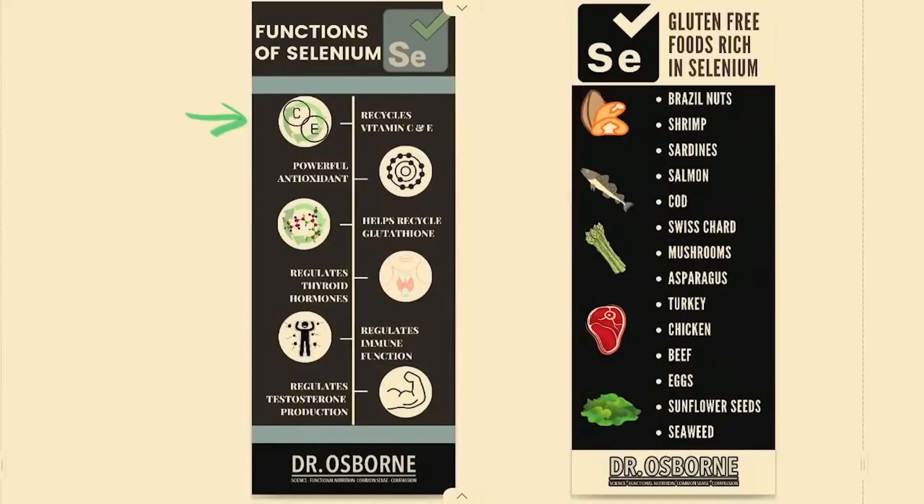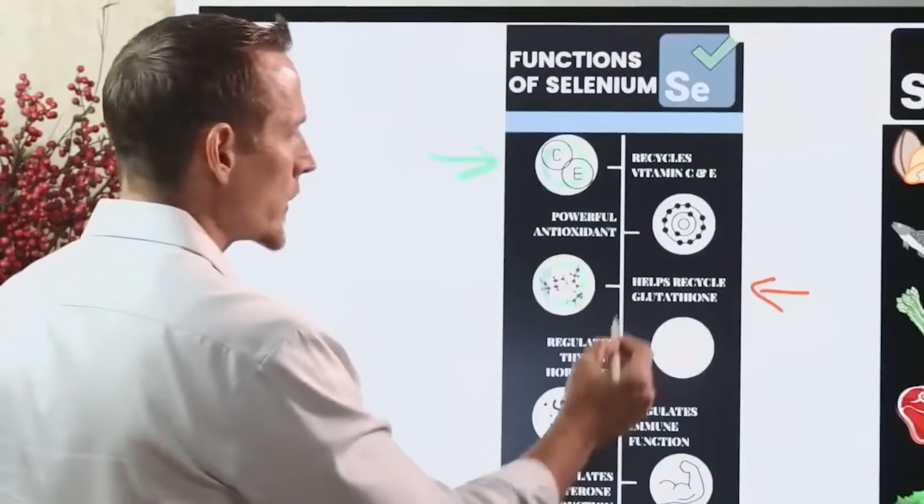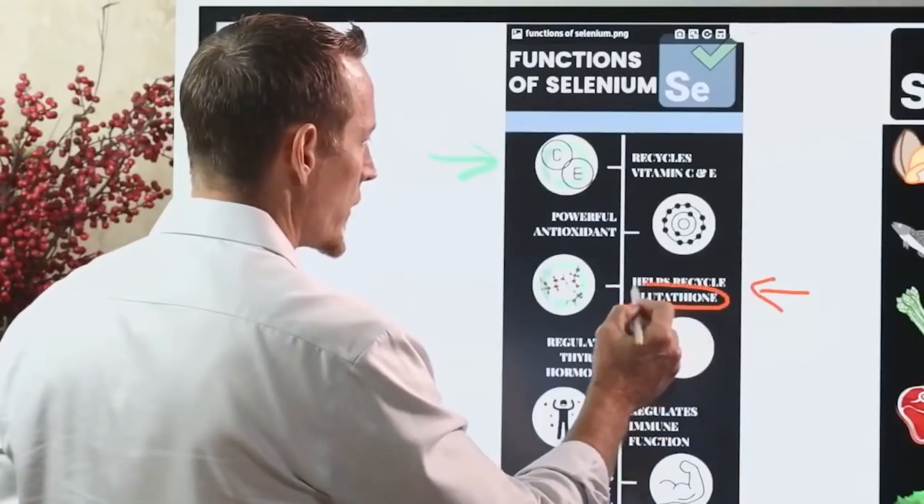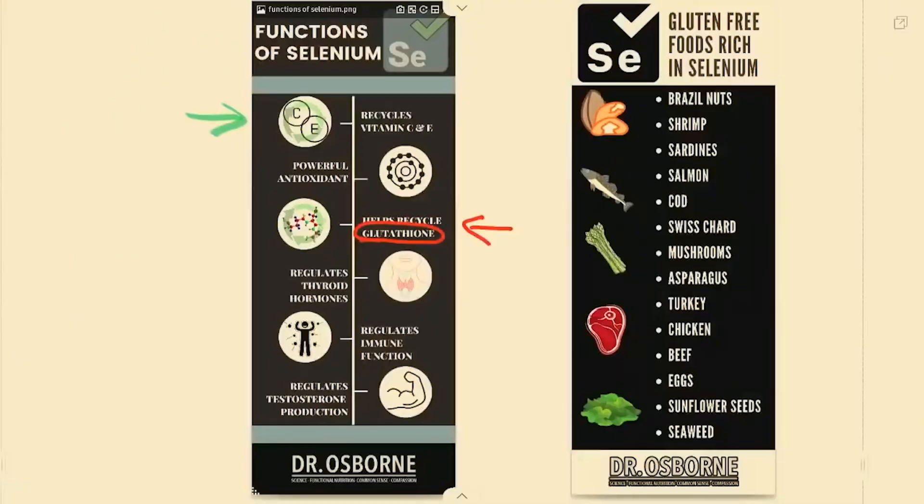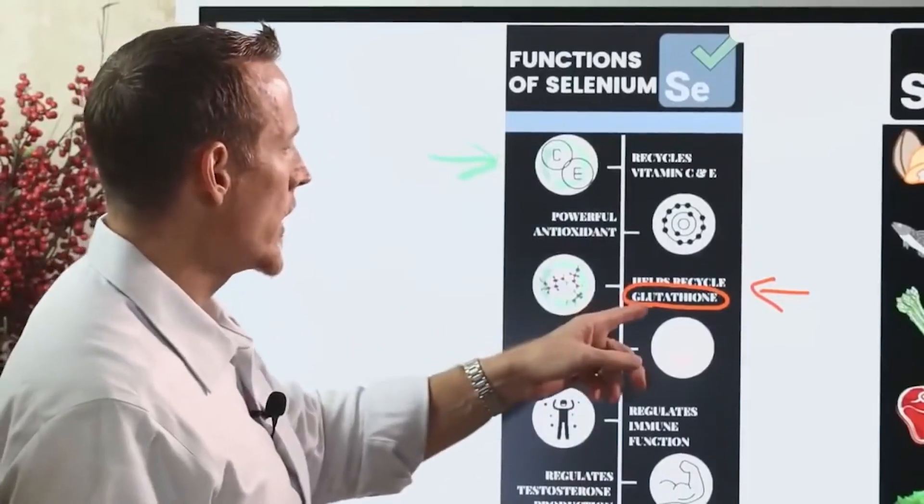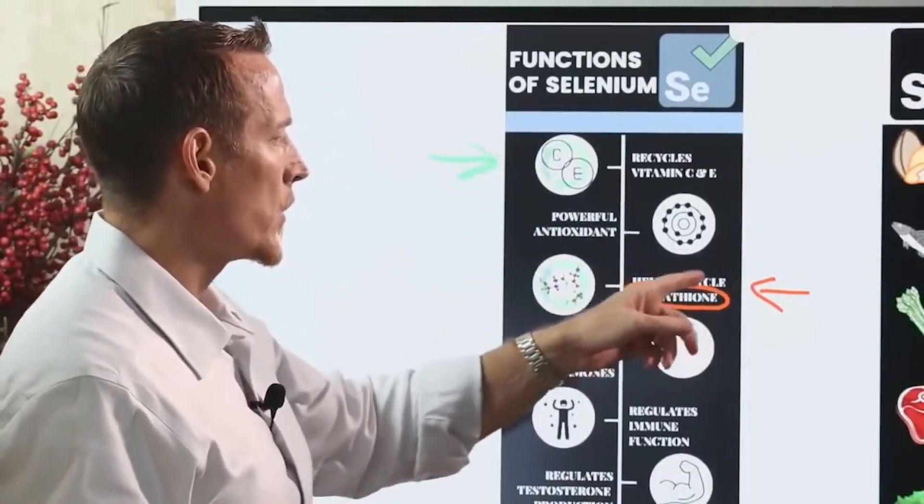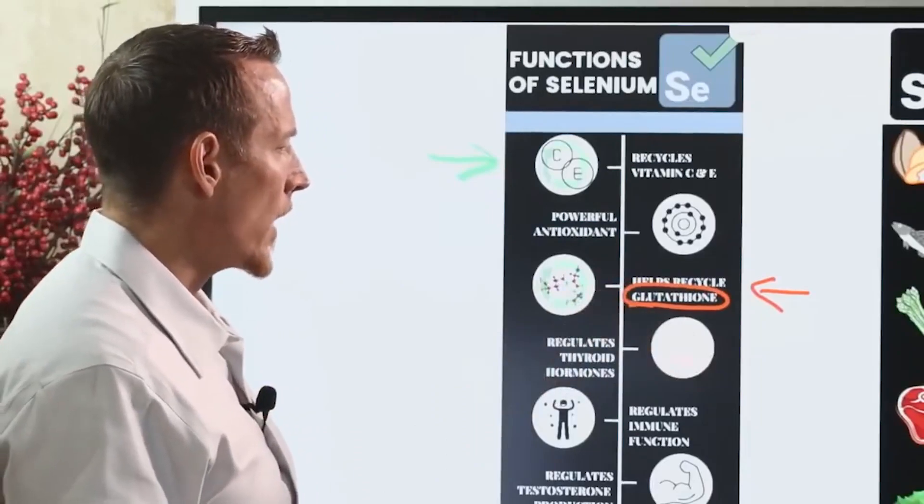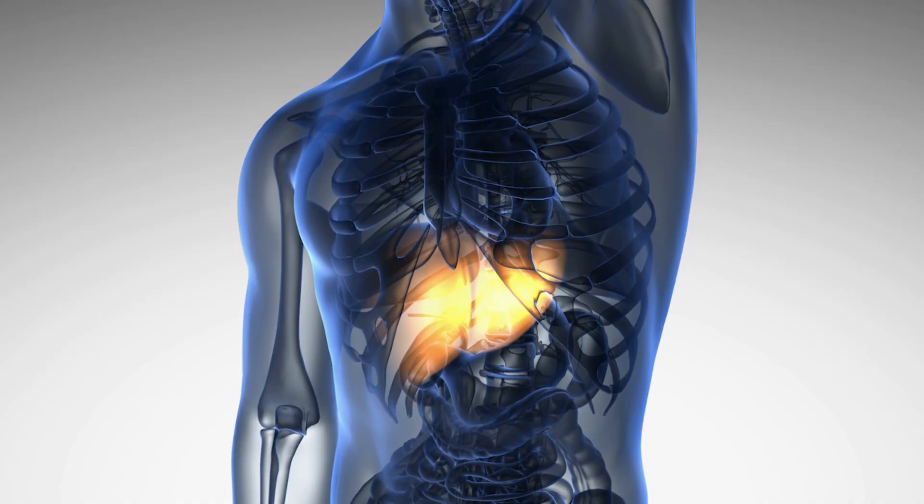Here are some of the primary functions. Selenium regenerates or recycles vitamin C and vitamin E, but also glutathione. Many of you have probably heard of glutathione - some of you probably even take supplemental glutathione. This is what your liver uses to detoxify a number of different toxic compounds that you come into exposure with every day. Your liver needs this glutathione to properly keep your body not toxin-free but unburdened.